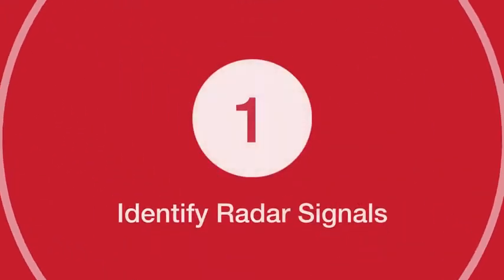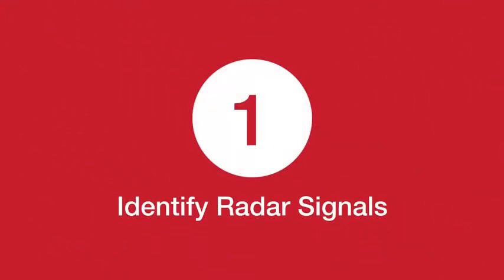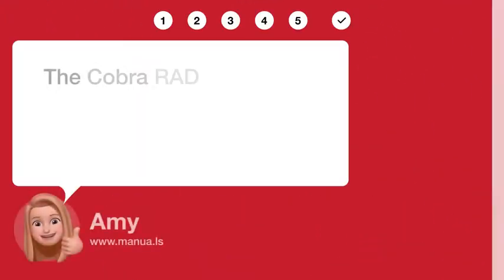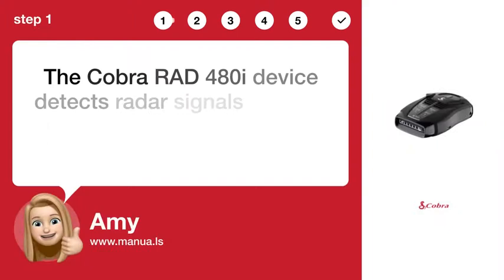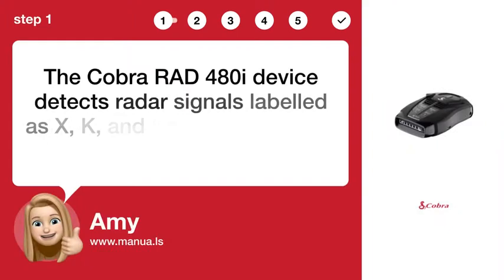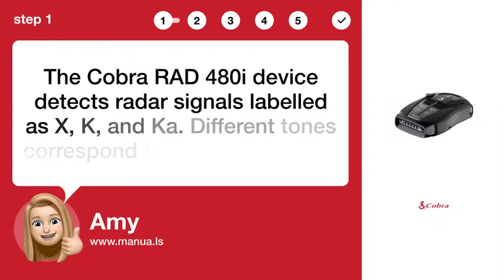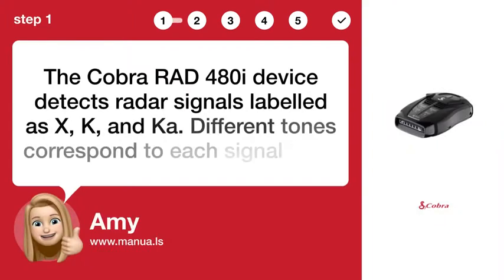Step 1: Identify radar signals. The COBRA RAD-480i device detects radar signals labeled as X, K, and Ka. Different tones correspond to each signal type.